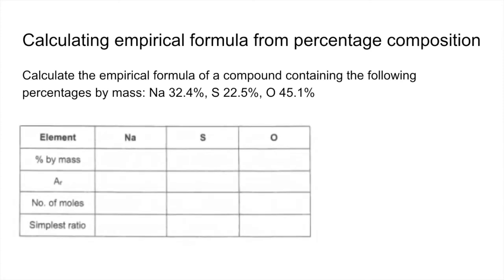Great thing about this is the method's exactly the same. So all we're doing here is we're assuming for every 100 grams, we've got 32.4 grams of sodium, 22.5 grams of sulfur, and 45.1 grams of oxygen. So we're just putting the percentages in now. We're still going to put the relative atomic masses in and divide the mass by the relative atomic mass to get the moles.